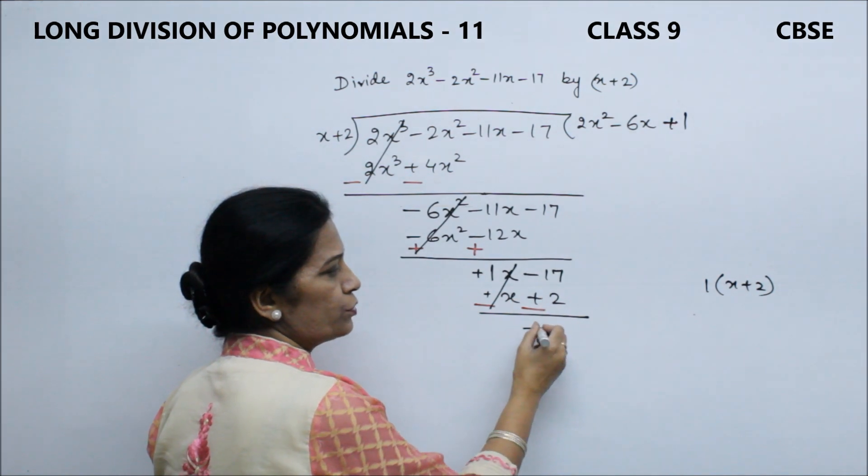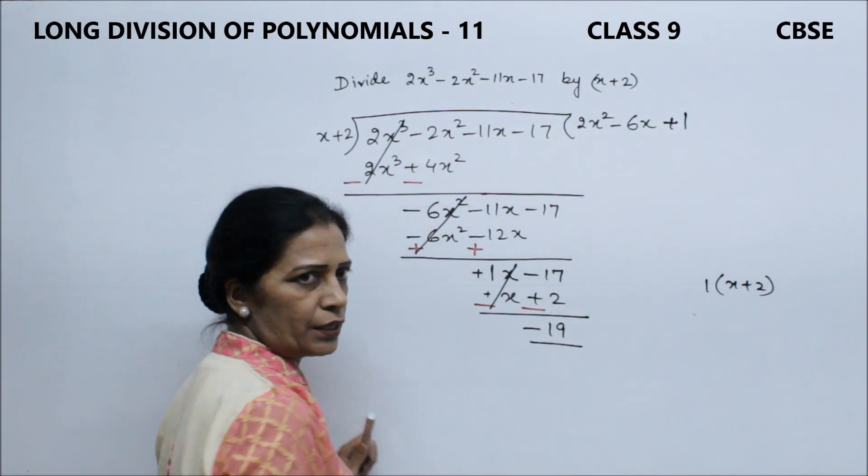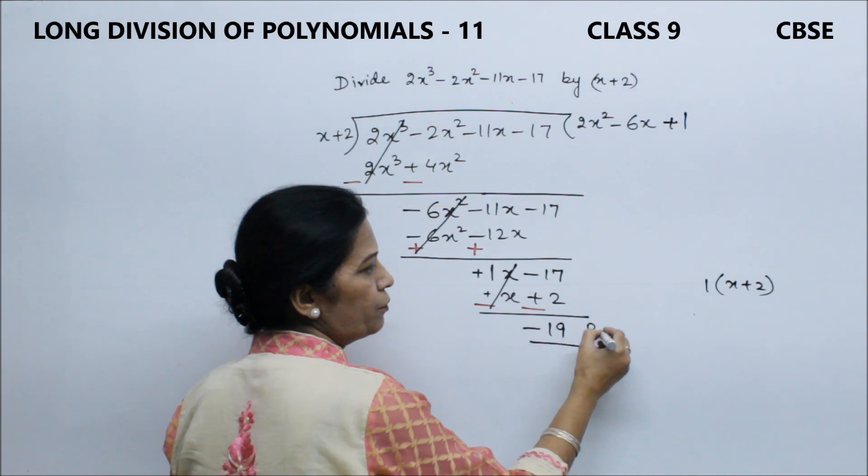How much is our answer? -17 minus 2, this is -19. What do we call this? We call this the remainder.